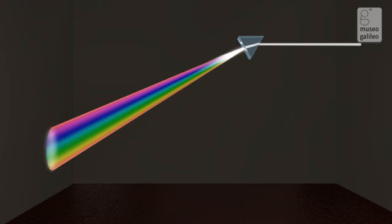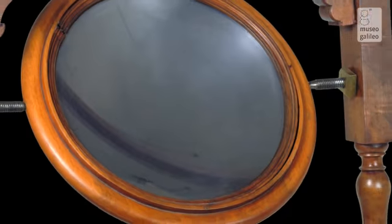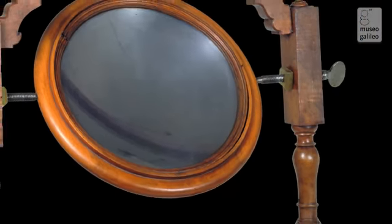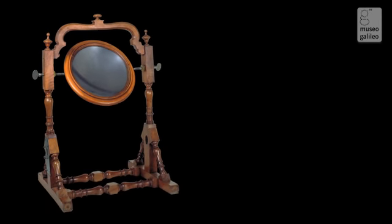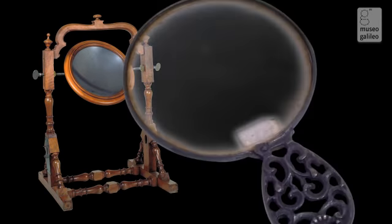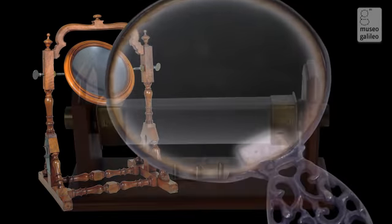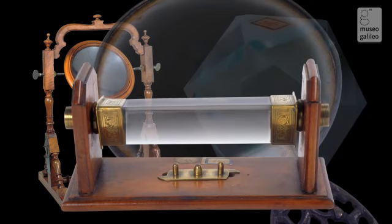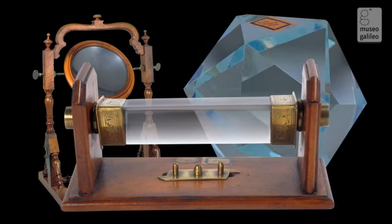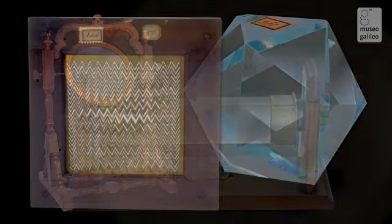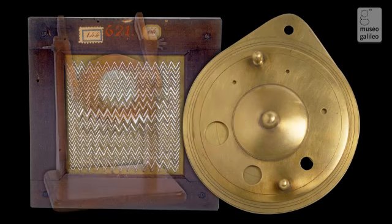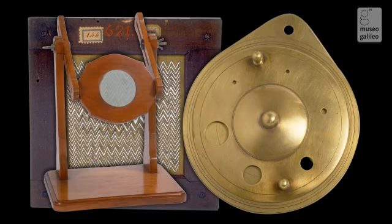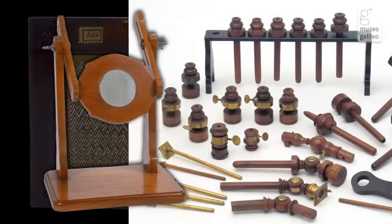In the 17th and 18th centuries, experimental optics were still relying on instruments of modest quality. Mirrors of various types, lenses, prisms, glass polyhedrons, adjustable slits, and diaphragms were often mounted on pedestals or pivoted on rudimentary optical benches.